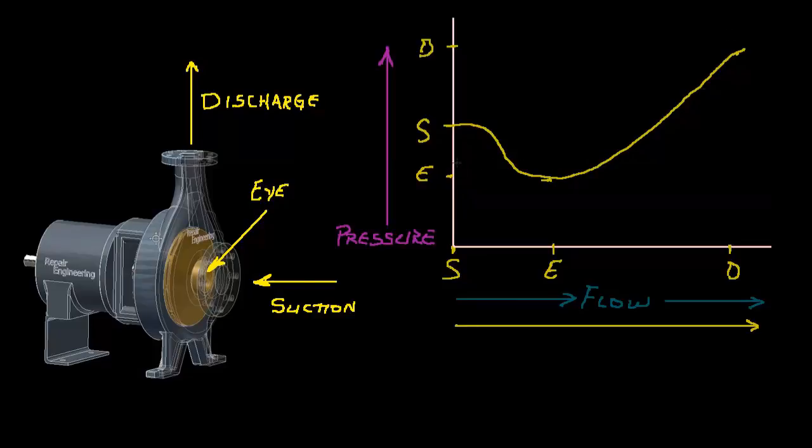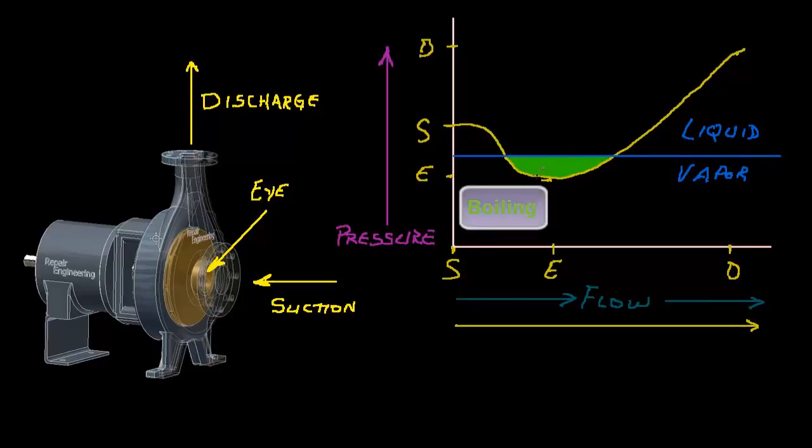Let's try a different example. In this case, let's assume that the boiling pressure is located here, higher than previously. Again, you can think of this as the line at which boiling occurs. Everything above this line is a liquid, and below the line is a vapor. Notice this area right here, where the pump curve line is lower than the vapor pressure line. This is the area where gas bubbles are being formed in the fluid. And at this location is the point where the gas bubbles collapse.